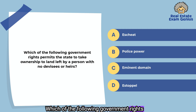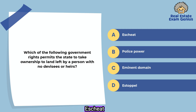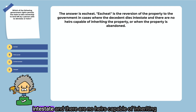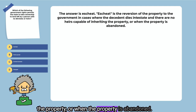Which of the following government rights permits the state to take ownership of land left by a person with no devisees or heirs? Escheat, police power, eminent domain, or estoppel. The answer is escheat. Escheat is the reversion of property to the government in cases where the decedent dies intestate and there are no heirs capable of inheriting the property, or when the property is abandoned.